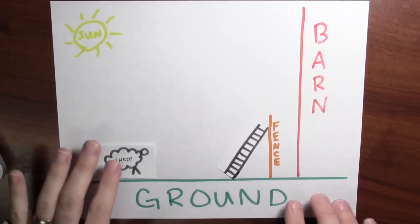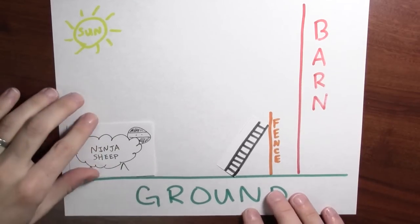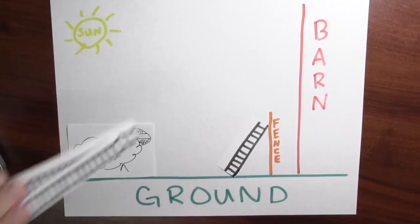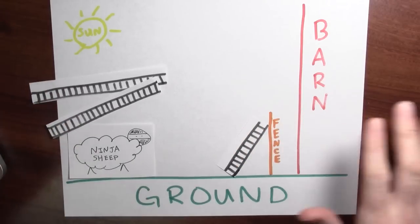Let's suppose that you're the sheep stuck behind the fence, but eager to get to the barn. The really good news is that you're not just a regular sheep. You're some sort of ninja sheep and you've got a supply of a bunch of different ladders.